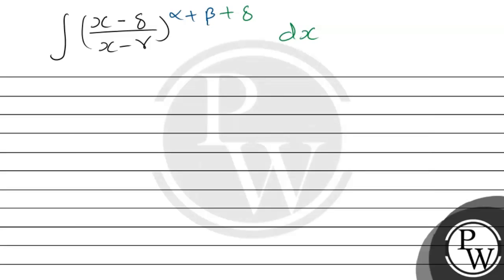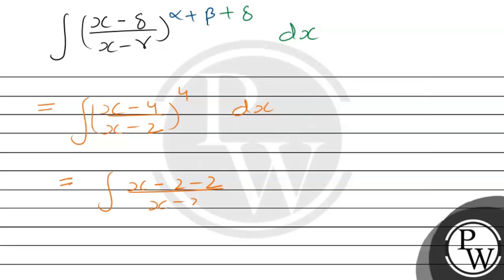This implies the integration of (x minus 4) divided by (x minus 2) raised to the power 4 dx, since alpha plus beta plus delta equals minus 1/2 plus 1/2 plus 4 equals 4.